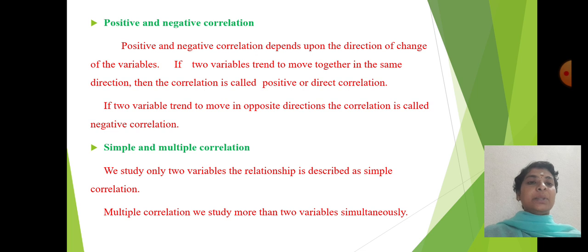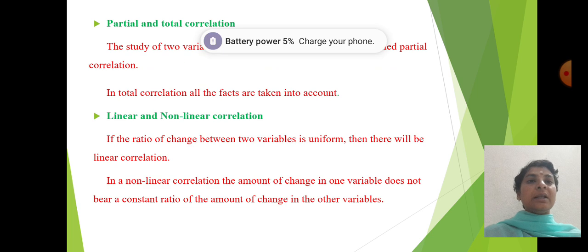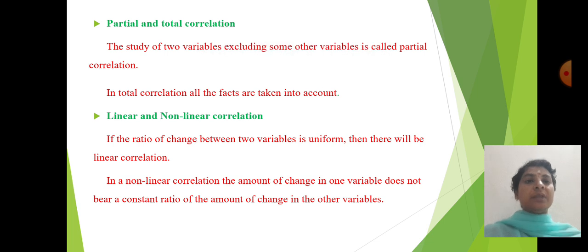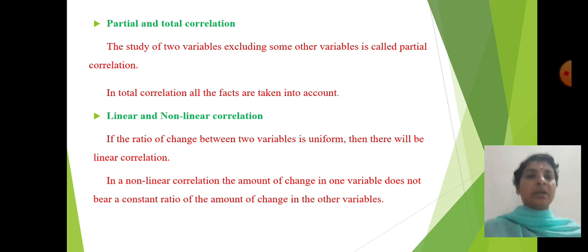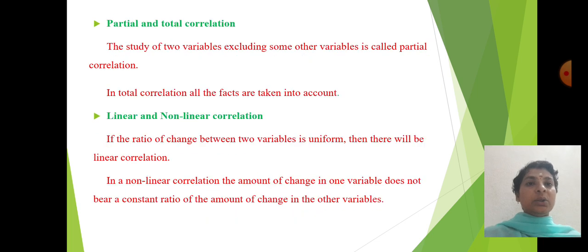In simple and multiple correlation: when we study only two variables, the relation is described as simple correlation. When we study more than two variables simultaneously, it is called multiple correlation. In partial correlation, the study of two variables excludes some other variables. In total correlation, all the factors are taken into account.